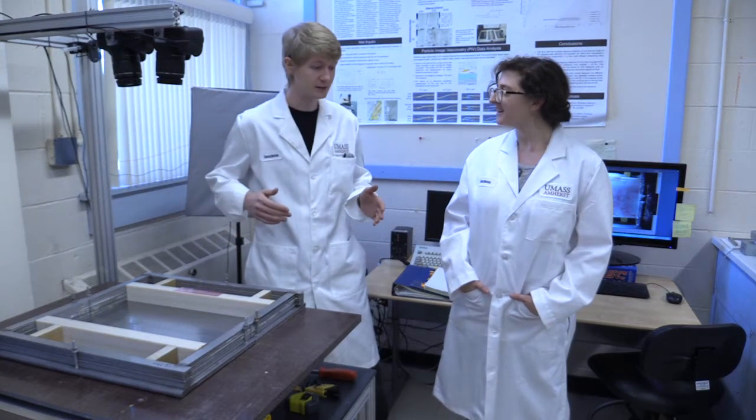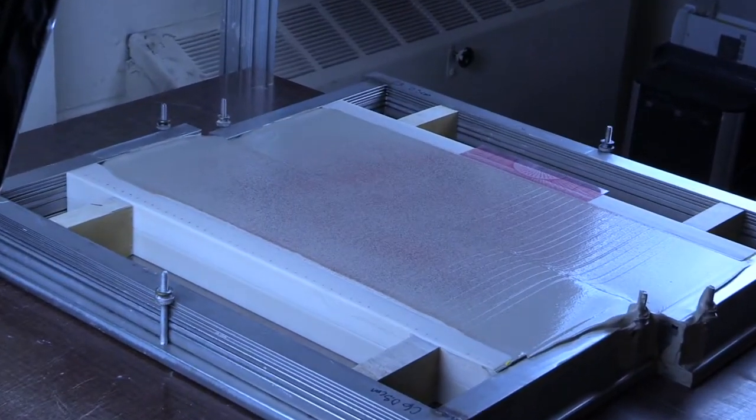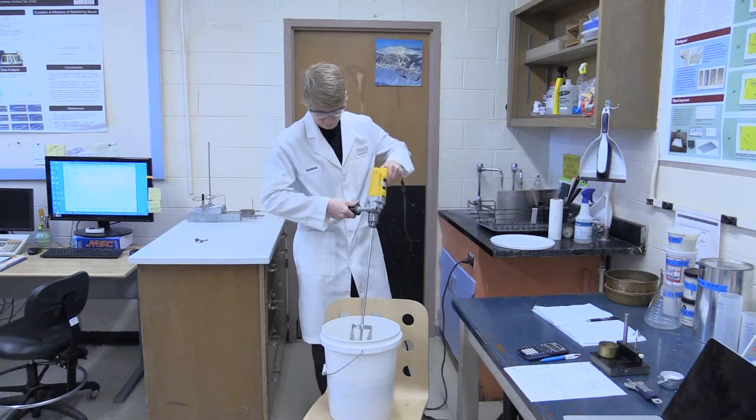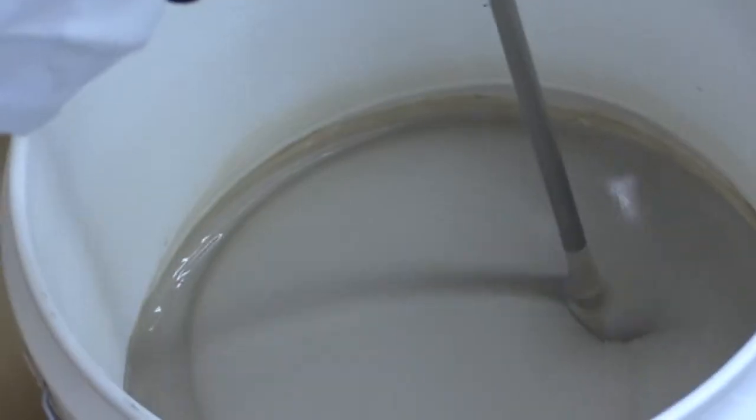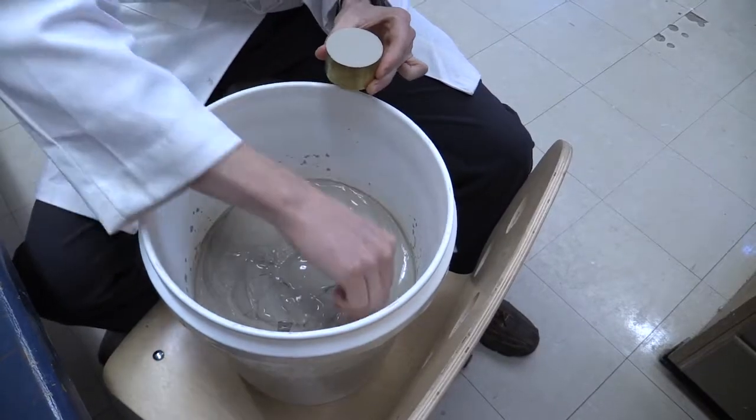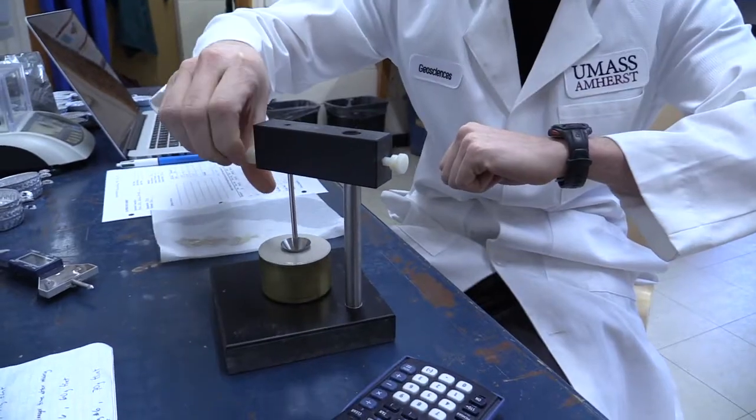So today we're going to be modeling a strike-slip fault system. We'll be growing our faults in a wet kaolin, it's a wet clay, and it has a consistency of about Greek yogurt.